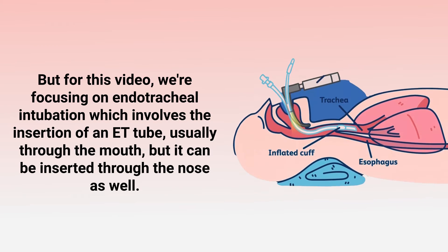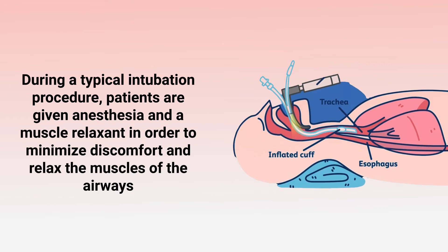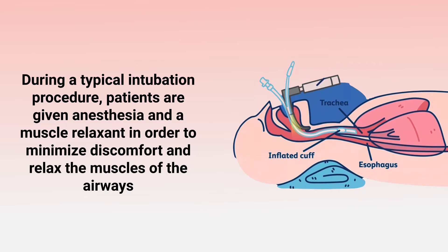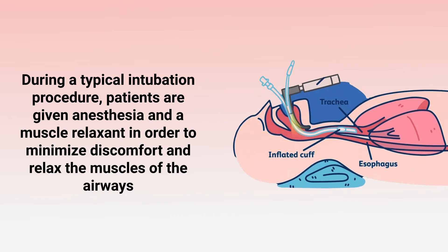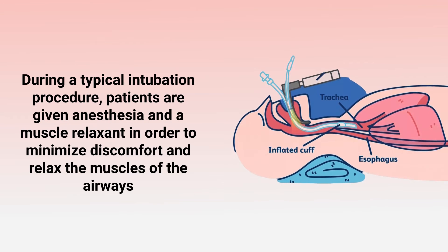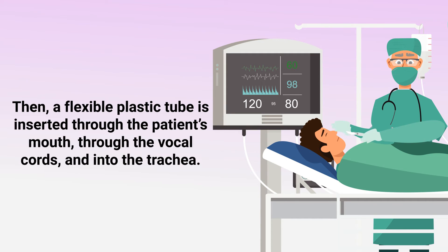Endotracheal intubation involves the insertion of an ET tube, usually through the mouth, but it can also be inserted through the nose. During a typical intubation procedure, patients are given anesthesia and a muscle relaxant to minimize discomfort and relax the muscles of the airways. A laryngoscope blade is used to open the mouth for visualization of the vocal cords, then a flexible plastic tube is inserted through the mouth, through the vocal cords, and into the trachea.